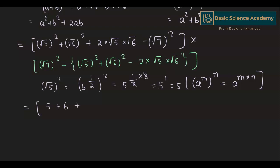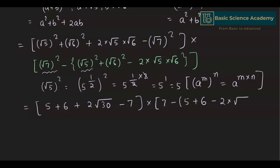This gives us: 5 + 6 + 2√30 - 7, multiplied by 7 - (5 + 6 - 2√30). Here √5 × √6 = √30, and √7² = 7.